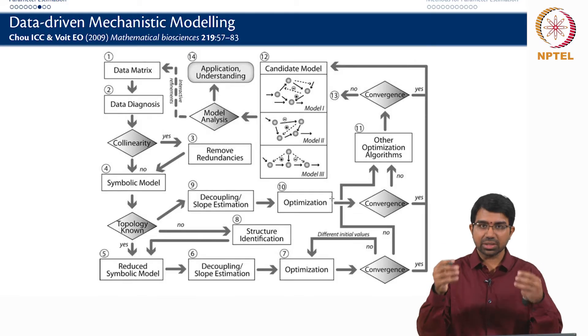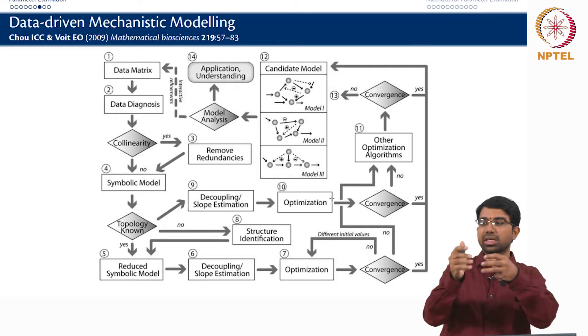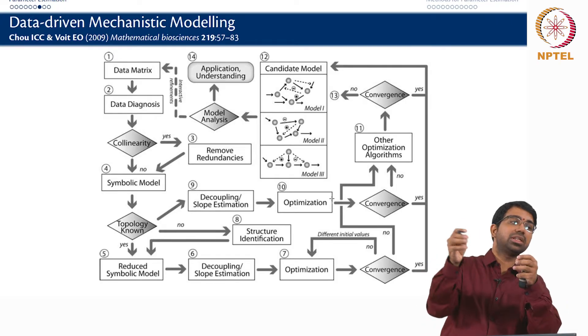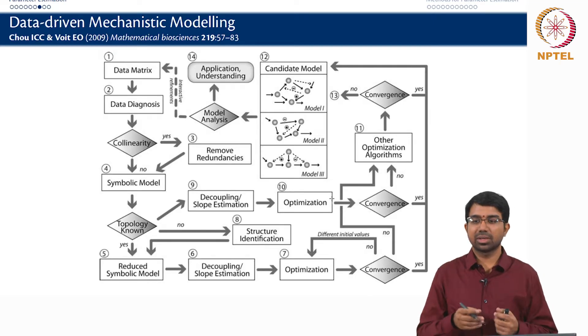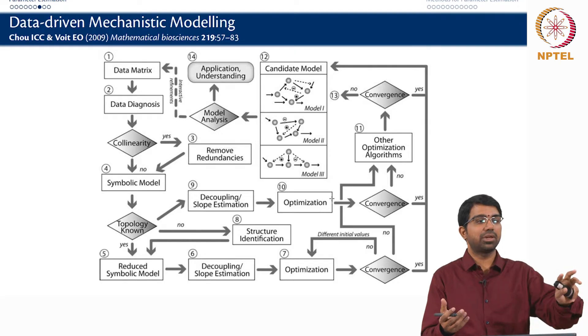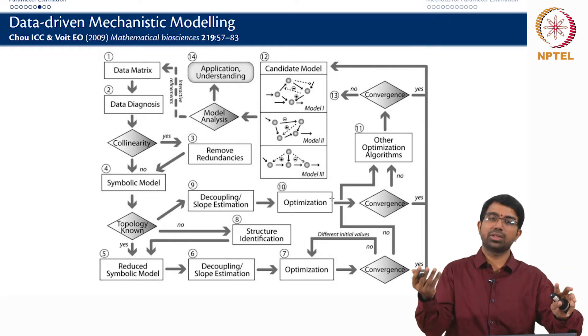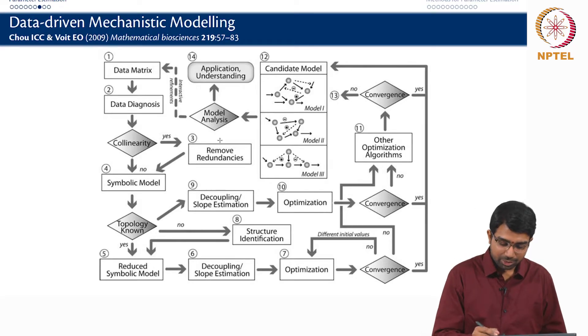You understand what I mean by topology? The connectivity between different species. This A giving B, B giving C, C giving D. Does B give C or B gives C plus D or maybe it does not make so much sense in a metabolic system but in a signaling system, this makes a lot of sense. Does something get phosphorylated once or twice or thrice and so on? Is there a feedback loop or not? Because one behavior will happen if there is a feedback loop. Another behavior will happen if there is no feedback loop. So how do you handle this?